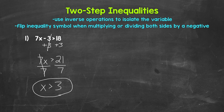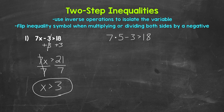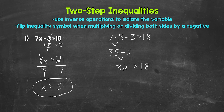Let's check a value greater than 3 to make sure it works. Let's use 5. So 7 times 5 minus 3 is greater than 18: 7 times 5 gives us 35, and 35 minus 3 gives us 32. 32 is greater than 18, so that does work. We are correct. Our answer is x is greater than 3.